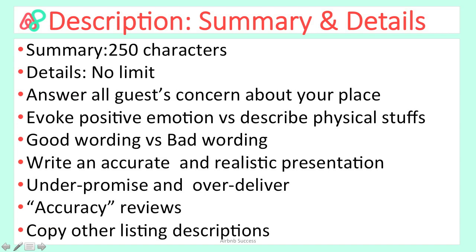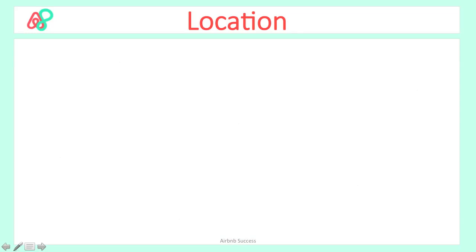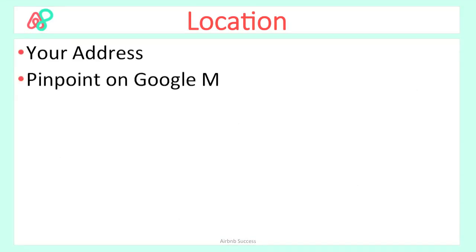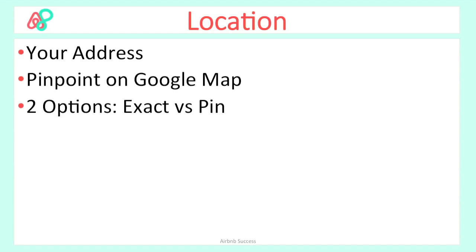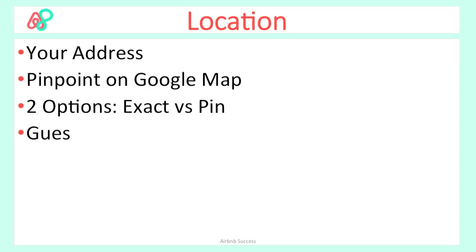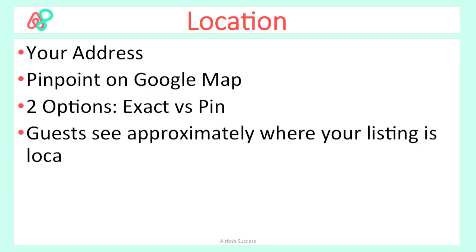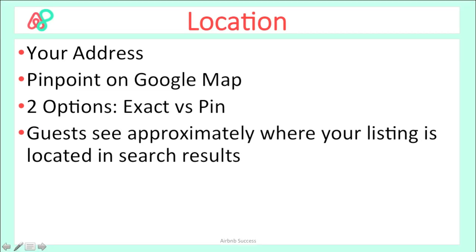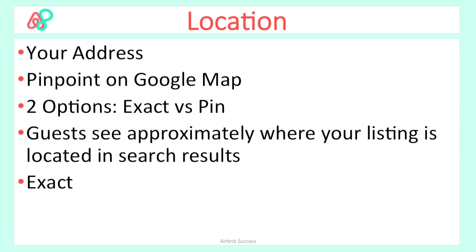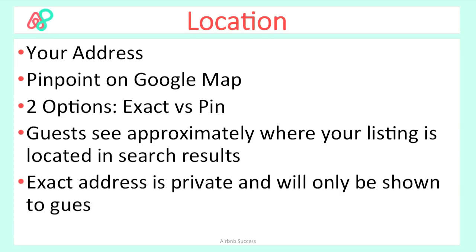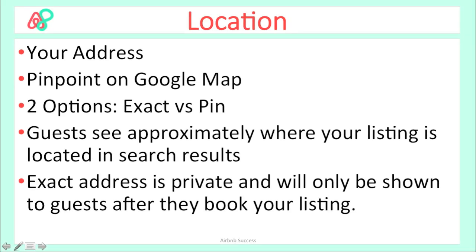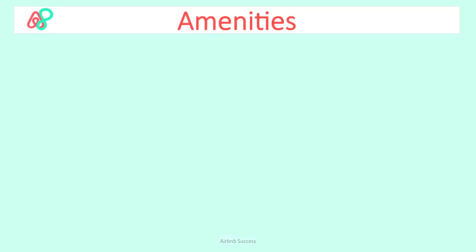For location, fill in your address and pinpoint it on Google Maps. Airbnb gives you two options: either an exact address or a pinned general area. The guest will see roughly where your listing is located in the search results but won't see the exact address until they book. Then Airbnb sends them confirmation with the exact address shown on the map inside the Airbnb app.